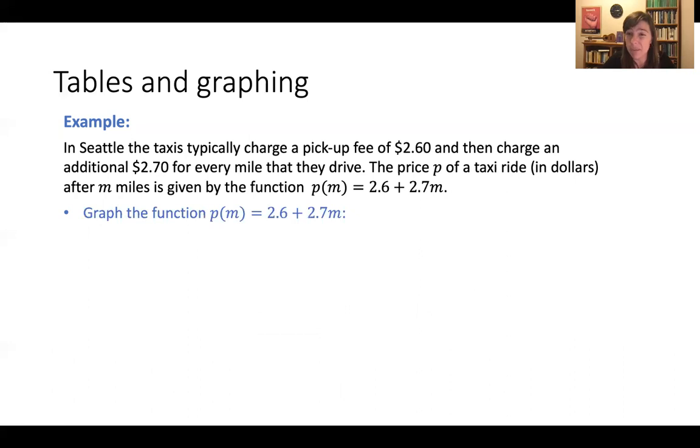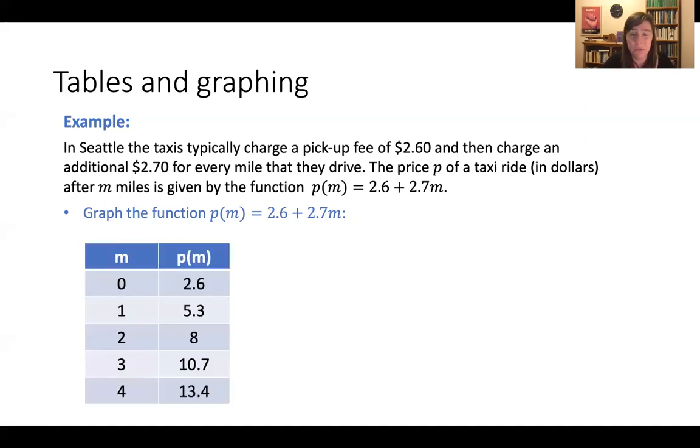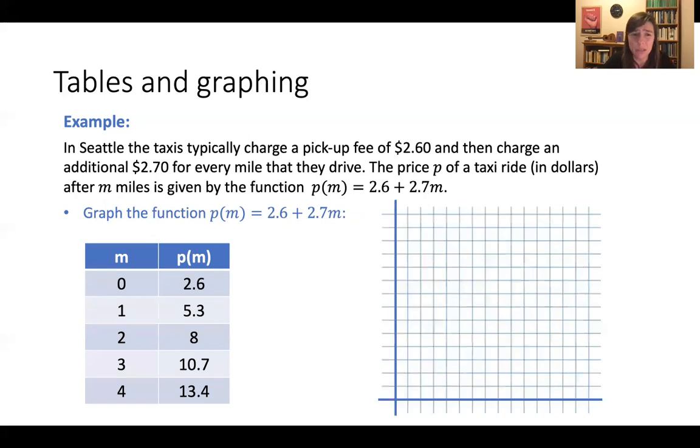You can also be asked to graph this function. And sure, you can use a graphing calculator. But if you didn't have one, the way you might graph this function is to say, all right, well, I have my table of values from before. Or if you didn't have a table of values, you make one and you plot the points. This is a place to start. Just plot the points. So here, if m is 0, p of m is 2.6. So our x axis is actually our m axis here. So if m is 0, our output p is 2.6 or something around here. In this row, we have the point 1, 5.3, 1, up 5.3, 4, 5, something like that.